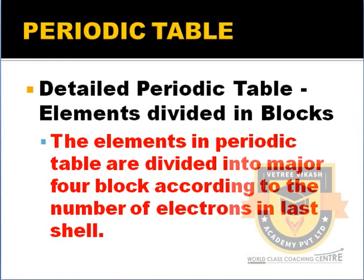Students, a chemistry student gets to know the periodic table, so all the problems will be easy to solve. We will talk about the periodic table. There are 4 major blocks. Each element has a last shell and a number of electrons.